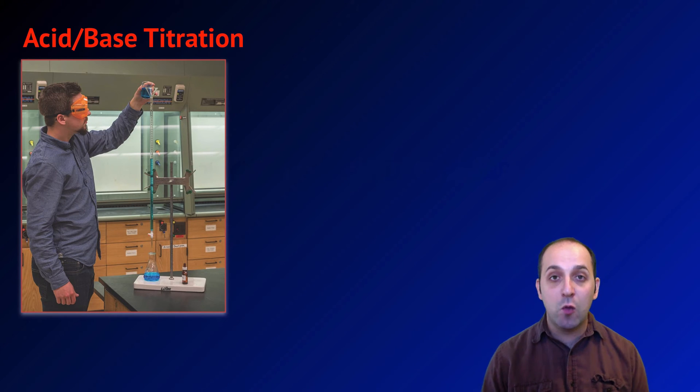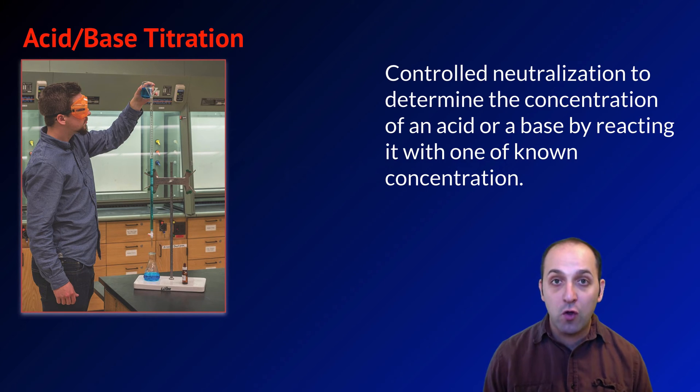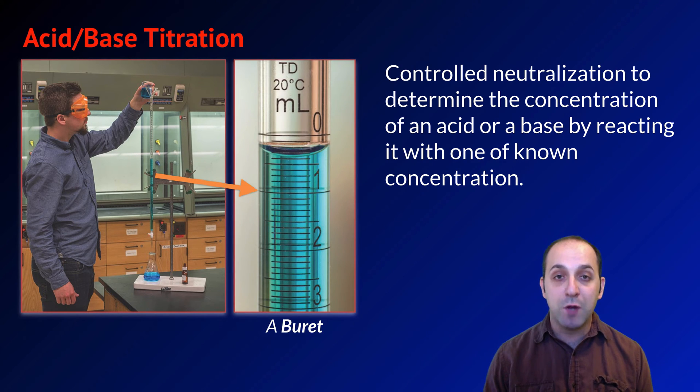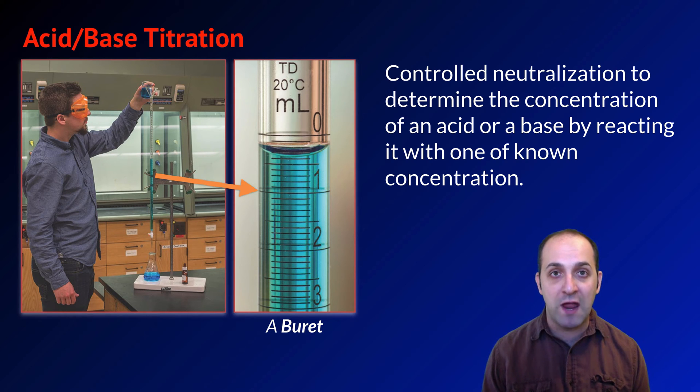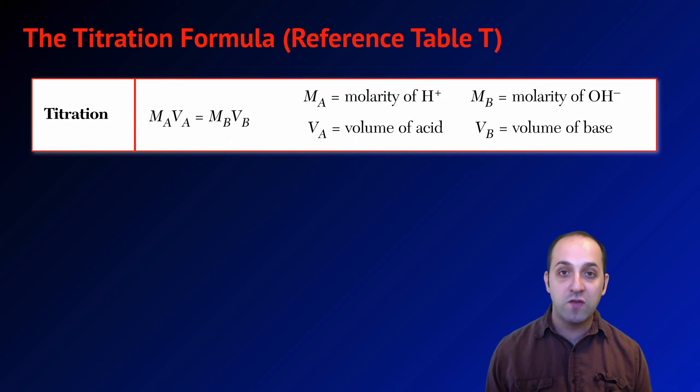One major place where we deal with neutralization reactions is in an acid-base titration. A titration is just a controlled neutralization reaction, which helps us determine the concentration of an unknown acid or base by reacting it with one of a known concentration. The star of the show is going to be the burette, which is a piece of apparatus that we can use in order to get very accurate volume readings during the titration. We'll demonstrate exactly how a titration works in class. It involves the use of an indicator and very precise measurements of the volumes of liquids that we're adding to the setup. But for right now, all you need is an understanding that it's a controlled neutralization reaction so that we can use the titration formula, which is on reference table T.